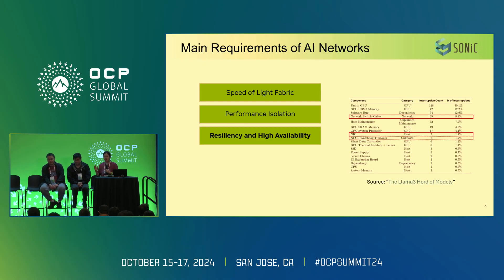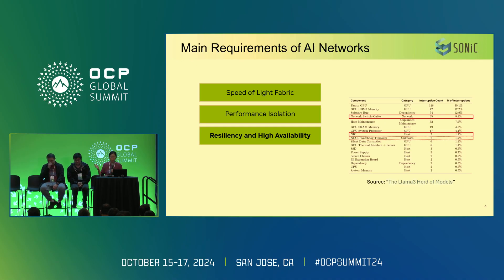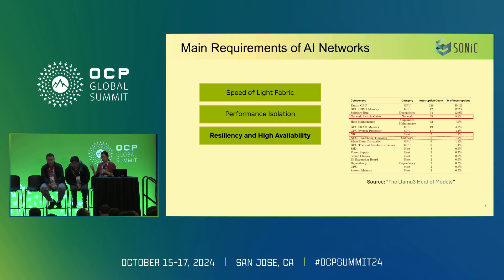The second area is about job resilience. Failures are unavoidable — failures will happen. Failures create disruptions when jobs are running. This is based on public data published by Meta, from their paper covering all sorts of failures and their impact on end-to-end job finish time. The takeaway is we wish to minimize the impact of network node and link failures on job performance.